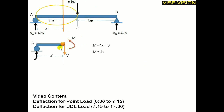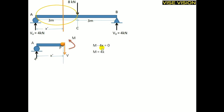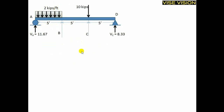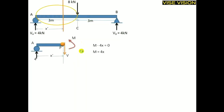I will take the moment about point P and take counterclockwise as positive. This M is the counterclockwise moment taken as positive, and 4 is the force with X as the moment arm. This 4X creates a clockwise moment about point P, so it is taken as negative. The sum of these two moments equals zero because only two moments are acting at this section — M and 4X. V does not create a moment because it passes through point P. This is the moment equation for the AC region.